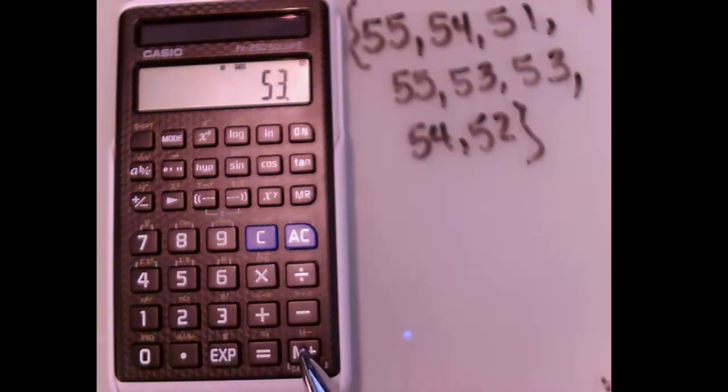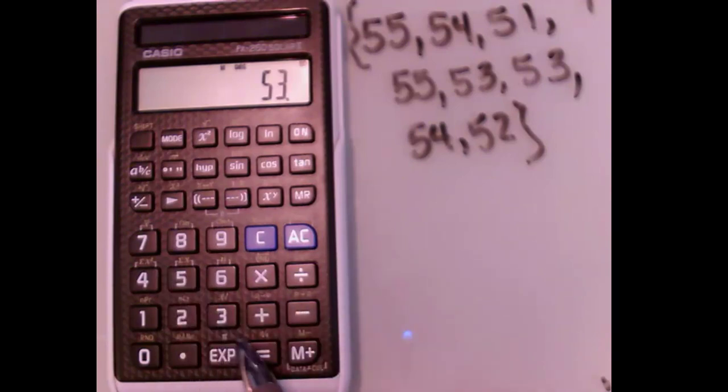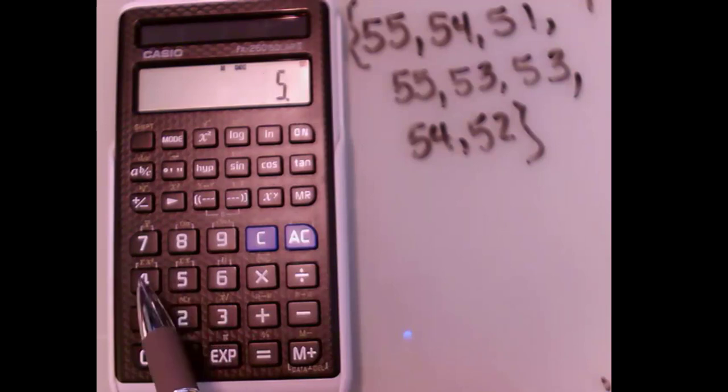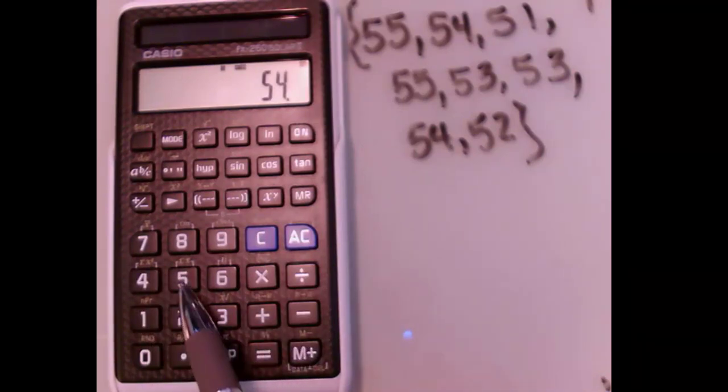And notice that 53 is here twice. So instead of having to type 53 again, I can just hit this data button again and it enters it two times. And then 54 and then 52.